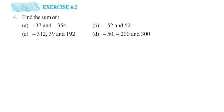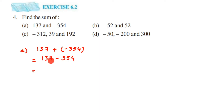The first question is 137 + (-354). You can see the signs are different, which means we have to subtract. So this will be 354 - 137. When you subtract, you get 217. But what is the sign? Which number is greater — 137 or 354? It's 354, and its sign is minus. So the final answer is -217.